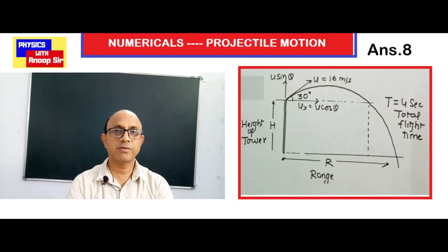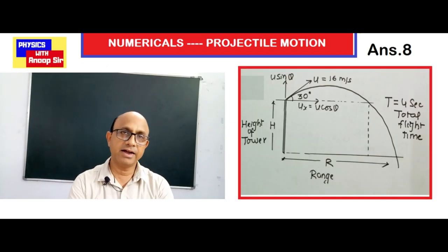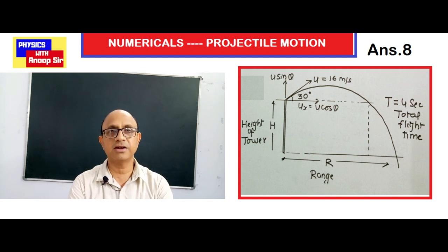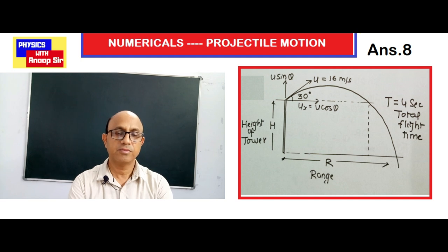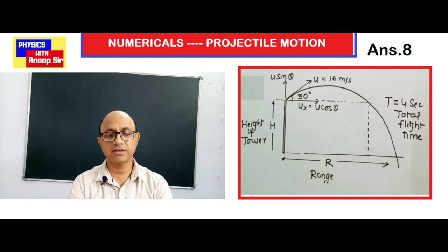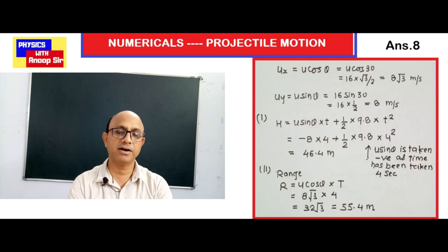In this question, there is a tower of height h. A stone is thrown upward from it with a velocity of 16 meter per second at an angle of 30 degrees from the horizontal. We resolve into two components: u_x = u cosθ and u_y = u sinθ. The total flight time given is 4 seconds — from the starting point until the ball hits the ground below.